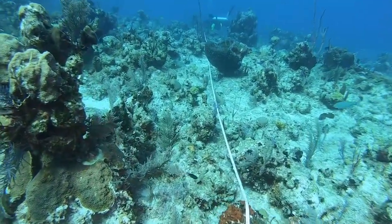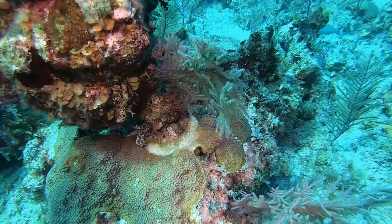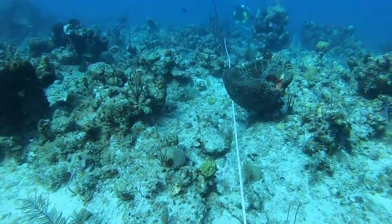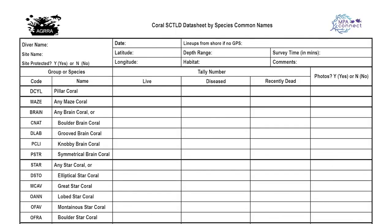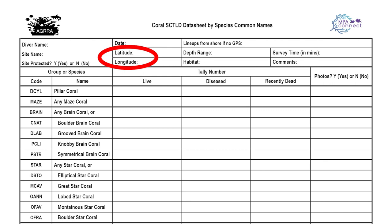Please remember to be careful when diving or snorkeling. Your safety and the safety of everyone around you should be your top priority. On the simpler AGRA data sheet, each diver should record the following information before the survey starts: the name of the person monitoring, the date of the survey, the site name, whether the site is protected or not, and latitude and longitude coordinates of the site.